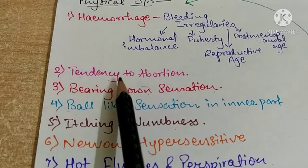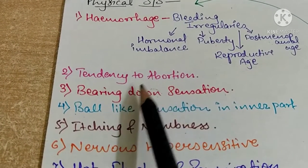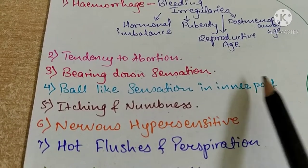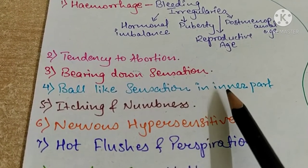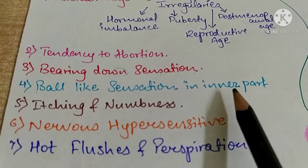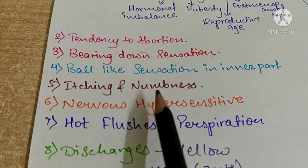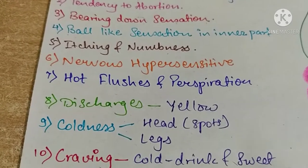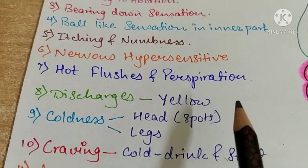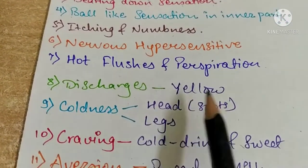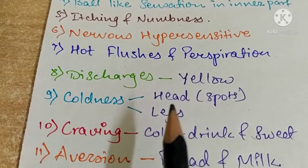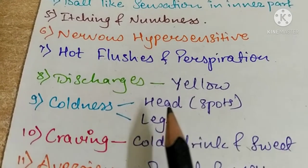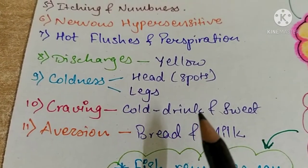There is a marked tendency to abortion, seen in all fish groups. Bearing down sensation is a key point of the fish group. Ball-like sensation in inner parts. Females may also complain of pseudo-pregnancies, and dermoid cysts can be present. Itching and numbness, nervous hypersensitivity, and hot flushes with perspiration are present. Discharges are yellow and some are offensive — as fish have an offensive smell, all discharges are similarly offensive. There is coldness of the head and extremities, with coldness in spots on the head.